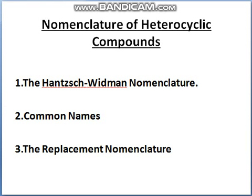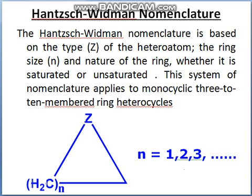The next topic is nomenclature of heterocyclic compounds. There are three steps: one is Hantzsch-Widman nomenclature, second is common name, and third is replacement nomenclature. The Hantzsch-Widman nomenclature is based on the type of heteroatom and the size and nature of the ring, whether it is saturated or unsaturated.